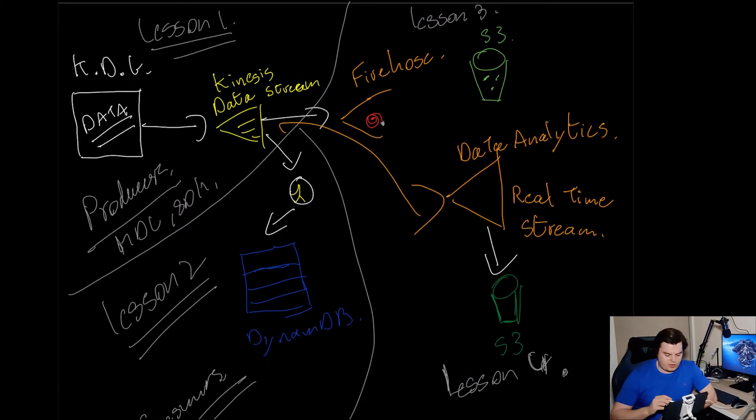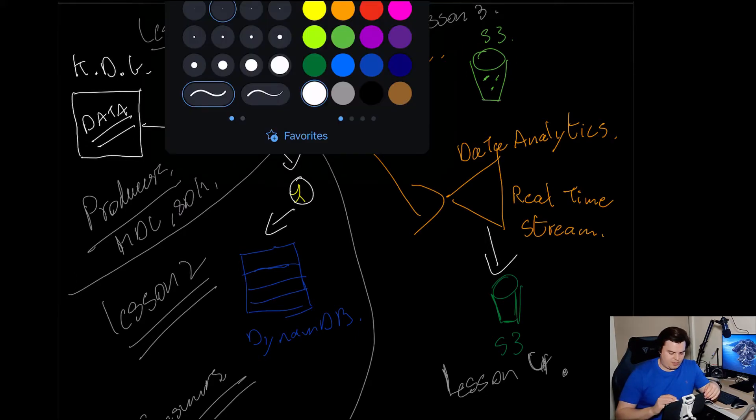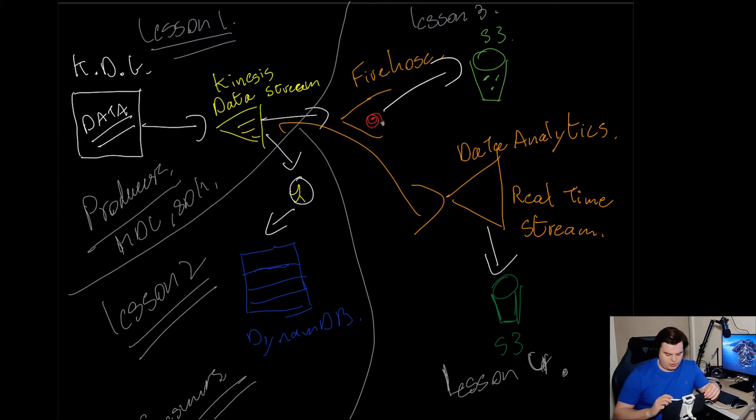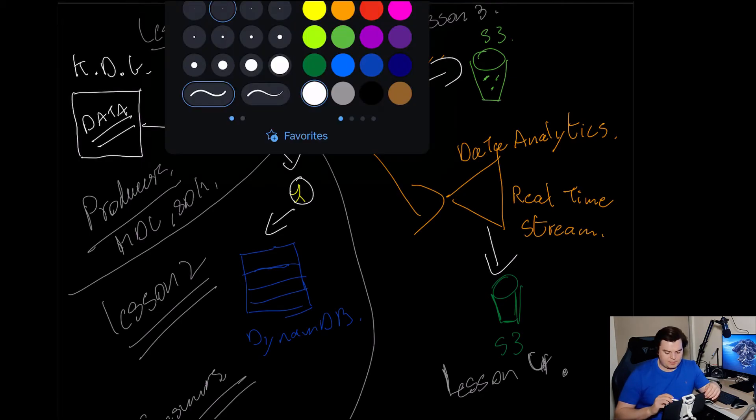Then in lesson three, which is up here, we'll use Kinesis Firehose with my little dodgy Firehose here, and we'll stream that data straight into an S3 bucket up here. So I'll just draw that line on now very quickly. We'll take that up and draw that into that S3 bucket.